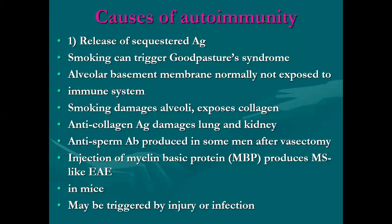The causes of autoimmunity: number one is related to the release of sequestered antigens. For example, smoking can trigger Goodpasture's syndrome. Alveolar basement membranes are normally not exposed to the immune system. Smoking damages the alveoli and exposes collagen, and then antigen-antibody reaction damages the lung. In anti-sperm immunity, abnormal production occurs in some men after vasectomy. Also, injection of myelin-based protein in mice can produce experimental autoimmune encephalomyelitis (EAE), and this may be triggered by injuries or infections.